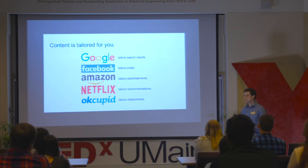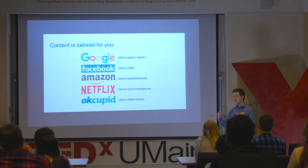Google tailors their search results. Facebook tailors their posts. Amazon tailors their advertisements. Netflix tailors their recommendations. And OkCupid tailors relationships. They try and match people based off of the information you've provided.